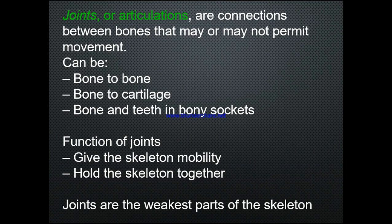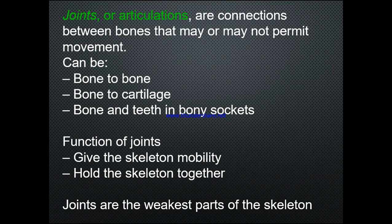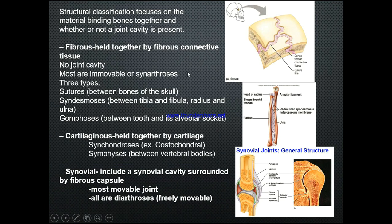Joints or articulations are connections between bones that may or may not permit movement. This connection can be bone to bone, bone to cartilage, or bone to teeth in bony sockets. The function of joints is to give the skeleton mobility and hold it together along with ligaments. Joints are the weakest part of the skeleton, so they are the most susceptible. Structural classification focuses on the material binding bones together and whether a joint cavity is present.